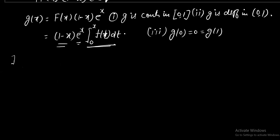So, by Rolle's theorem, there exists c ∈ (0,1) such that g'(c) = 0. There exists c. Now, check g'(c).